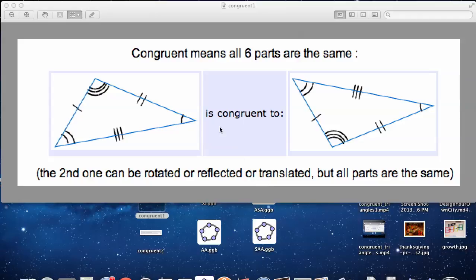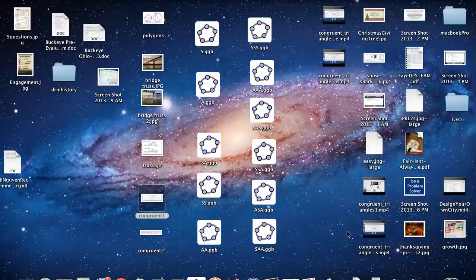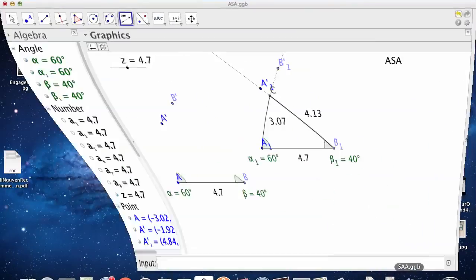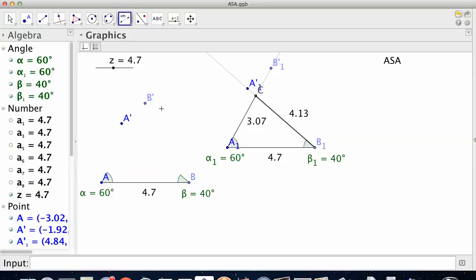We've looked at one part, we've looked at two parts, three parts. Now we're looking at knowing two angles and a side. So we know two angles and a side of a triangle.